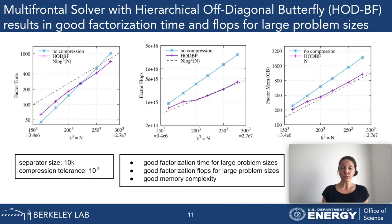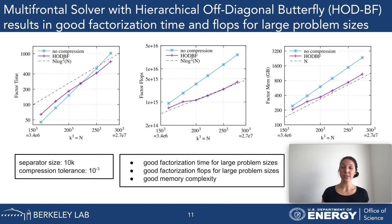The problem sizes on the x-axis range from 160³ to 280³. The multifrontal solver assembly tree has fronts that can be compressed or left dense. Lower in the tree, where frontal matrices are smaller, we do not compress. Higher in the tree, HODBF compression is applied whenever a front corresponds to a separator size of 10,000 or higher; all other fronts stay dense.